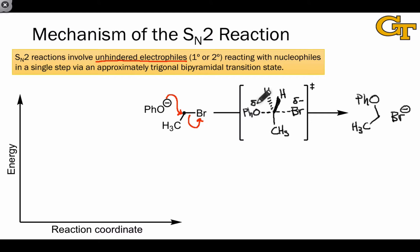This means that in the transition state, bromine has a partial negative charge, and phenoxide has a partial negative charge. And there's a net transfer of charge in this direction as the step occurs.